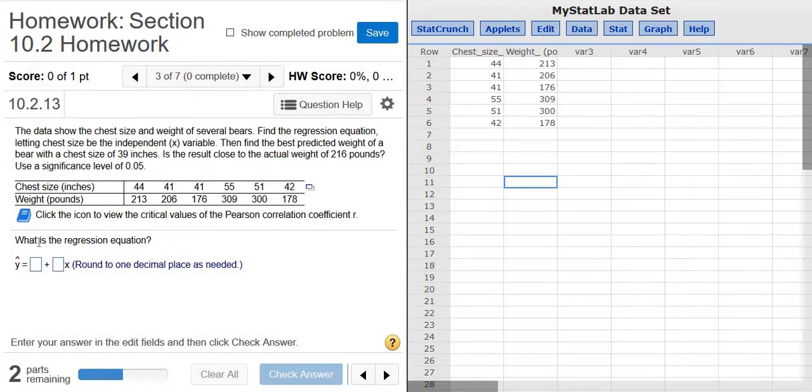And so part A, or the first part, wants the regression equation. So what you do is you click this here and you click Open in StatCrunch, and it types the data into StatCrunch for you. So I already have that over here on the right.